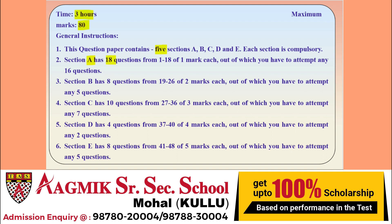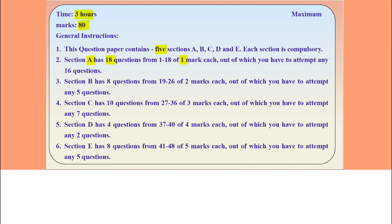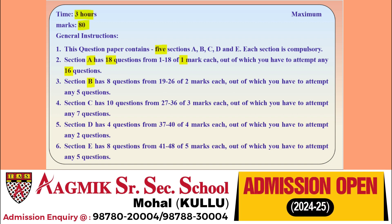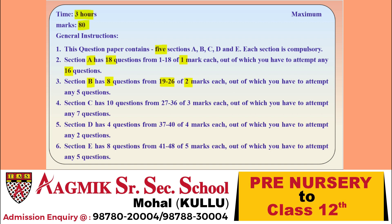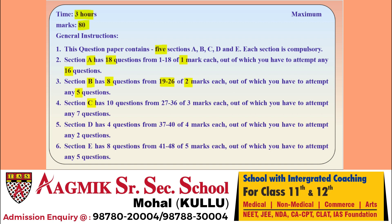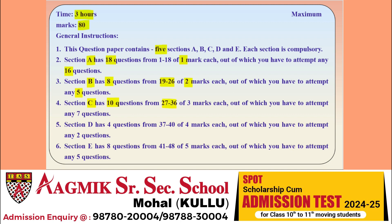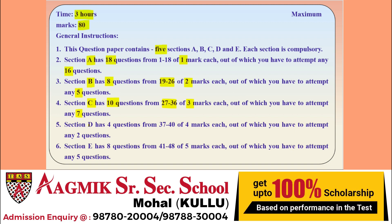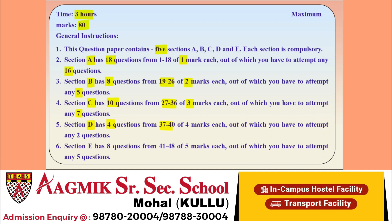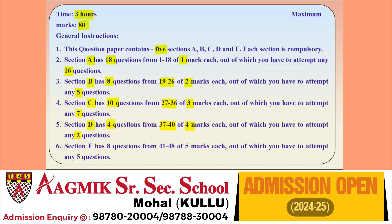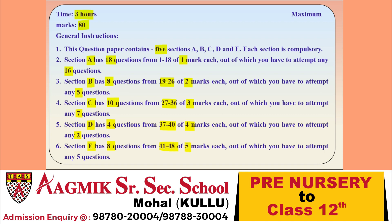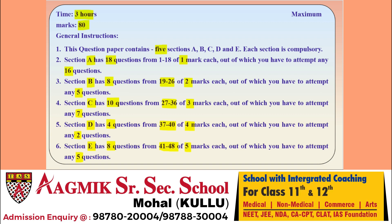Section A has 18 questions of 1 mark each, out of which you have to attempt only 16 questions. Section B has 8 questions from 19 to 26 of 2 marks each, out of which 5 questions are to be attempted. Section C has 10 questions from 27 to 36 of 3 marks each, out of which any 7 are to be attempted. Section D has 4 questions from 37 to 40 of 4 marks each, out of which any 2 are to be attempted. Section E has 8 questions from 41 to 48 of 5 marks each, out of which any 5 are to be attempted.